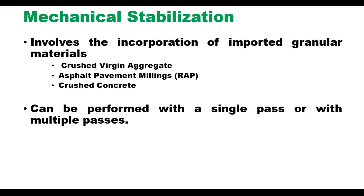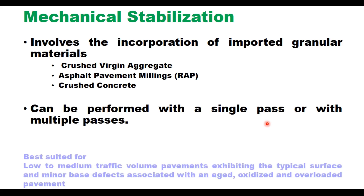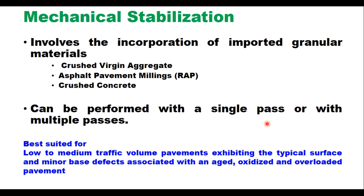In case of mechanical stabilization, imported granular materials such as crushed virgin aggregate, asphalt pavement milling material (RAP), or crushed concrete are added. It can be an addition of either virgin aggregate or recycled material and can be performed with a single pass or multiple passes depending upon the requirement. Mechanical stabilization is best suited for low to medium traffic volume pavements exhibiting typical surface and minor base defects associated with an aged, oxidized, and overloaded pavement.